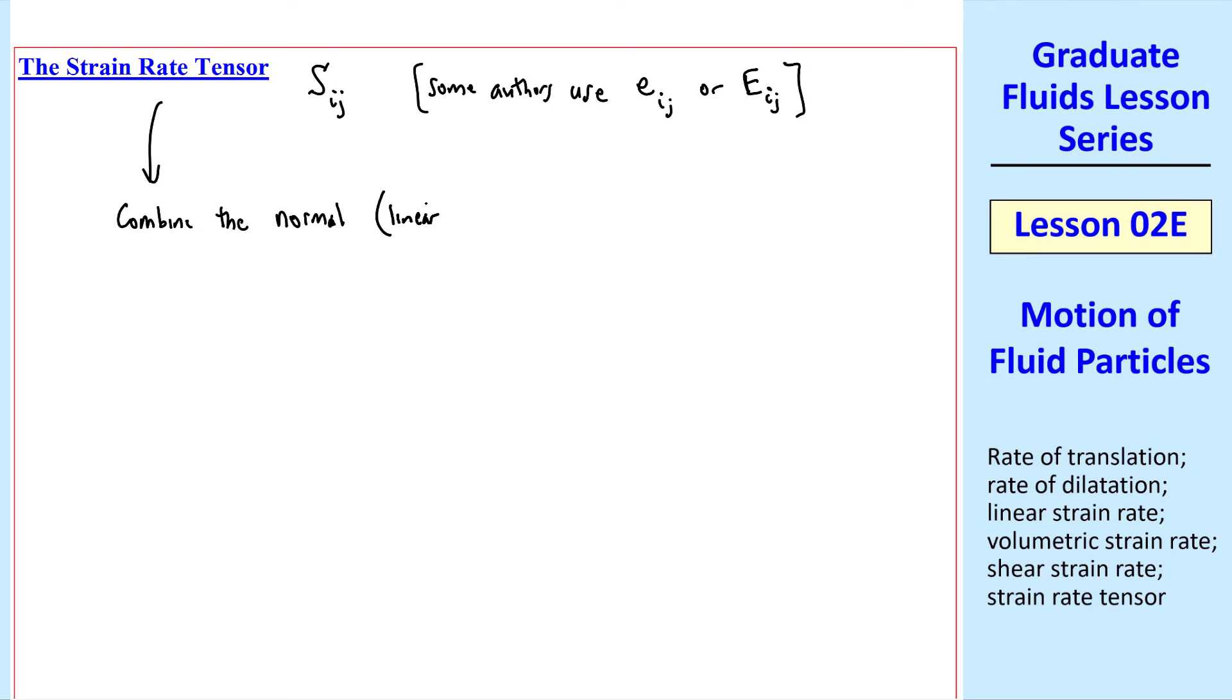What is the strain rate tensor? We combine the normal, in other words the linear, and tangential, in other words the shear strains into one second order tensor. Here are the components.